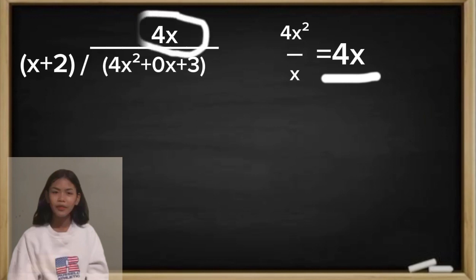So that will be 4x multiplied by x plus 2. And the answer is 4x squared plus 8x.